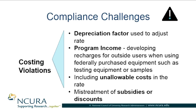In one case, a depreciation factor was manipulated to make rates look their best — institutions were picking numbers based on specialized equipment, and that is a costing violation. Also, depending on how your institution chooses to recognize and manage program income, that can be a problem if you are inconsistent with that treatment.